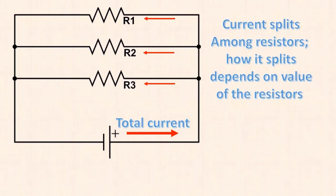It's the current that gets divided up and flows through the various elements. The amount of current through each element depends on the resistance of that element — the higher the resistance, the less current flows through it. All individual branch currents sum up to the source current, and this is referred to as Kirchhoff's Current Law, or KCL.